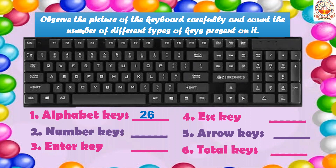Now let us see the number keys. In the keyboard you can see there are two sets of number keys. Altogether, if you count both sets, there are 20 number keys on a keyboard. If only one set is shown, you write 10 — that is 0 to 9. As there are two sets, you write 20.